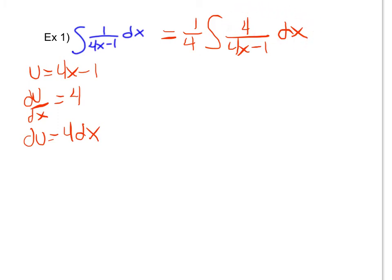thus giving me 1 fourth times the integral of 1 over u du. I can't integrate if I have u on the bottom, but because it is now a monomial on the bottom, I can bring it to the top. And now I'm ready to integrate.